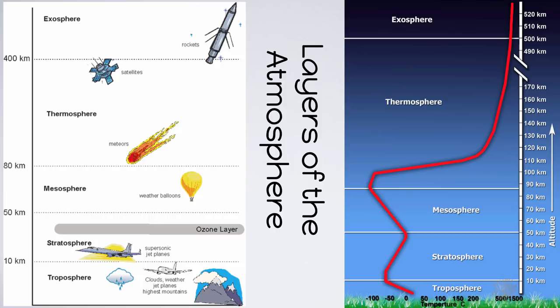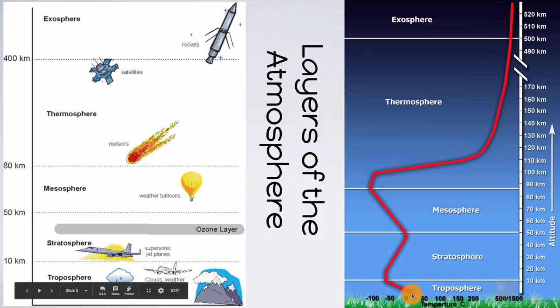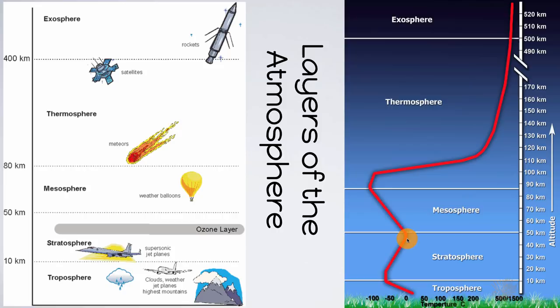Once you get into the stratosphere, you have the ozone layer, which is a really important part of our Earth, because it protects us from UV rays and also makes the temperature of this layer slightly hotter. As we go up in elevation and altitude, temperature decreases. But as soon as you get to the stratosphere, the temperature begins to increase. Then in the mesosphere, the temperature once again starts to decrease.